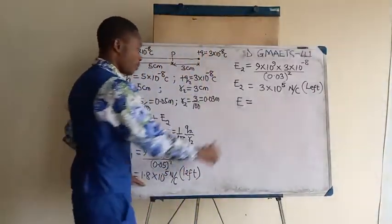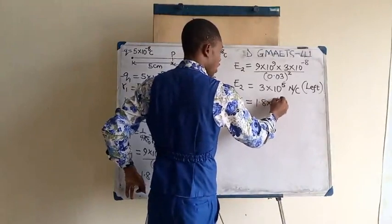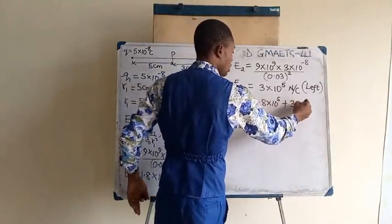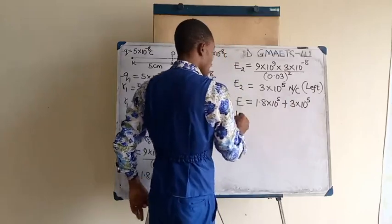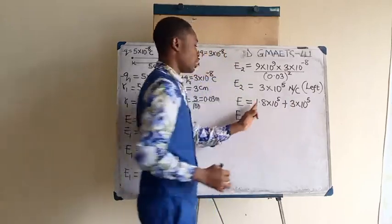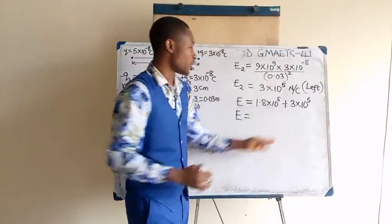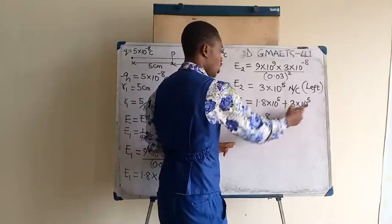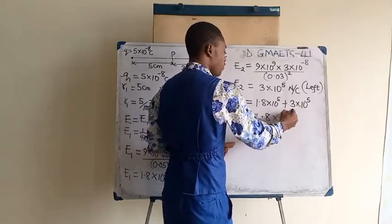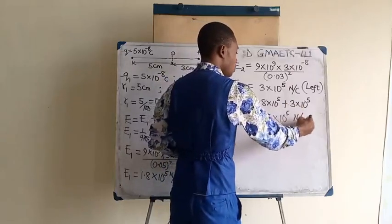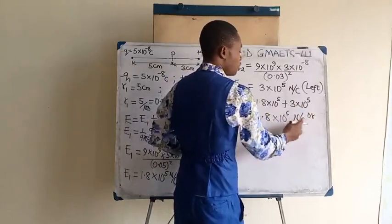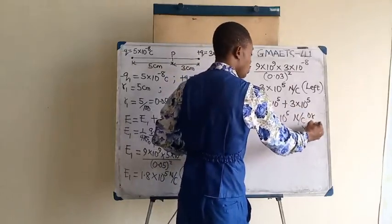So we are going to add E1 and E2. E1 is 1.8 times 10 to the power of 5 plus E2 which is 3 times 10 to the power of 5. So the resulting electric field is 1.8 plus 3 which gives us 4.8. Take the common times 10 raised to the power of 5, with the unit Newton per Coulomb. But like I said, the unit of this can still be volts per meter.